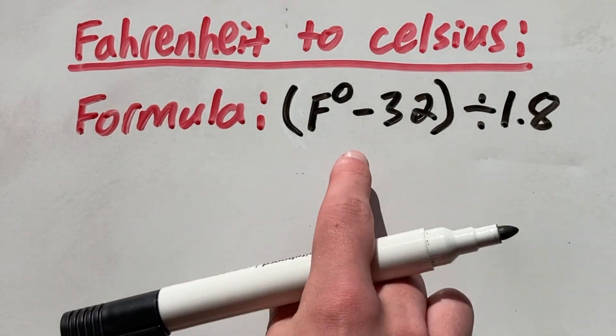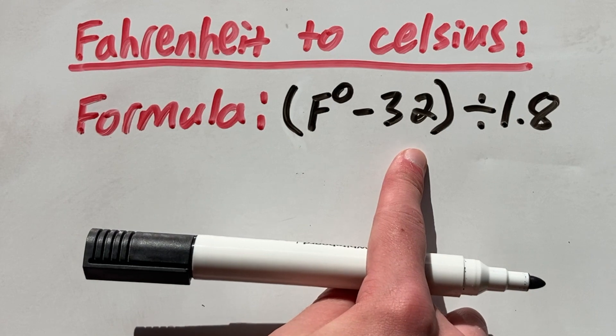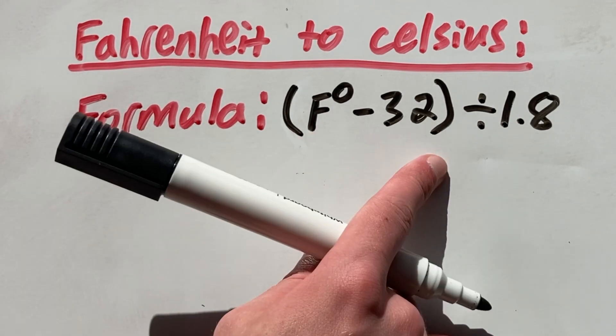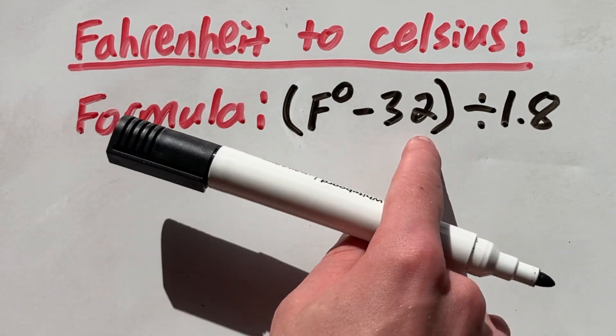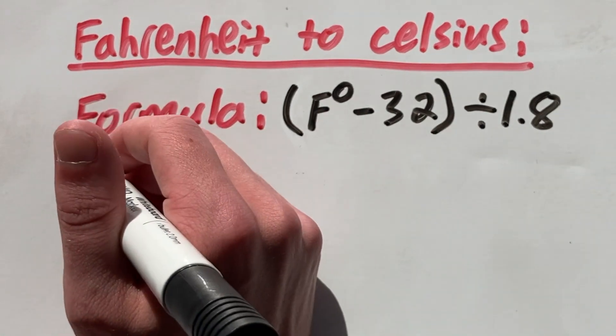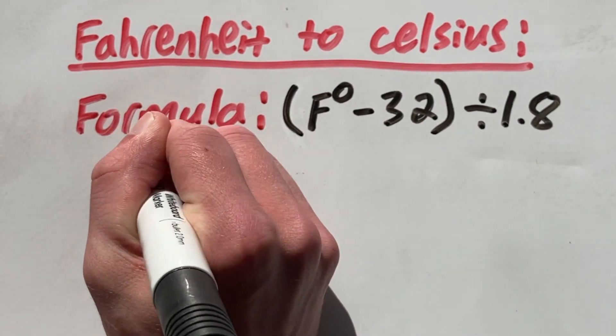So be careful when you're looking at this formula. As you can see, this Fahrenheit minus 32 is in brackets. And if you remember from school, whatever's in brackets you have to do first. But I won't complicate things for this conversion. You're simply working from left to right.